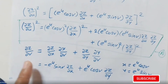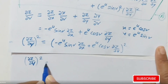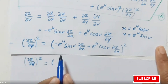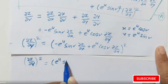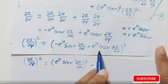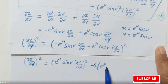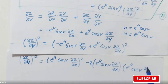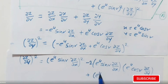Now take the square on both sides. Applying (a−b)² gives (∂z/∂v)² = (e^u·sin v)²·(∂z/∂x)² − 2·(e^u·sin v)·(∂z/∂x)·(e^u·cos v)·(∂z/∂y) + (e^u·cos v)²·(∂z/∂y)². Note the negative sign in the middle term. This is equation (B).